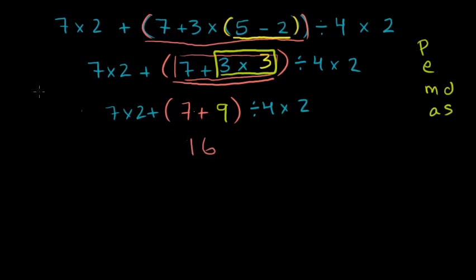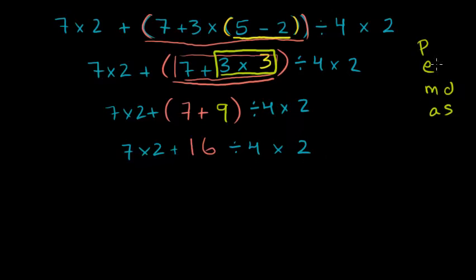So everything simplifies to 7 times 2 plus 16 divided by 4 times 2. Now we don't have any parentheses left, so we don't have to worry about the P in PEMDAS. We have no exponents either. So then we go straight to multiplication and division. We have some multiplication going on here, some division going on here, and another multiplication there.